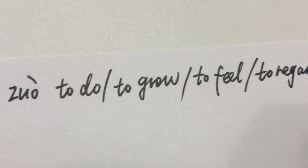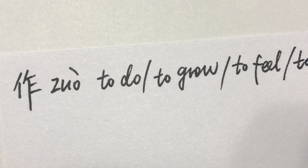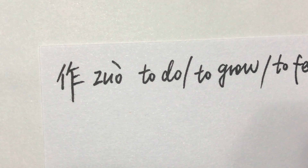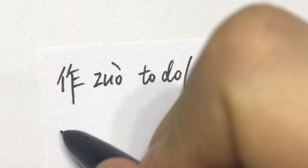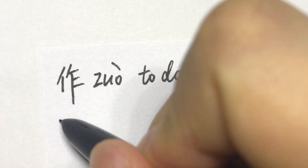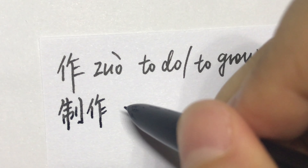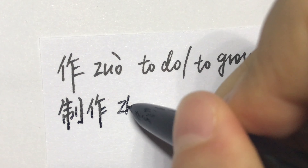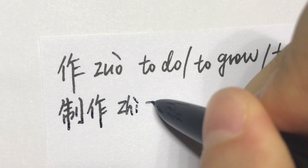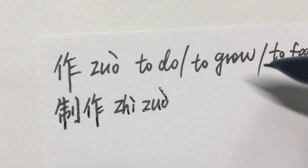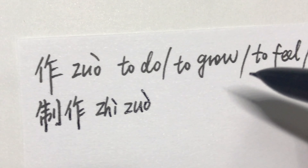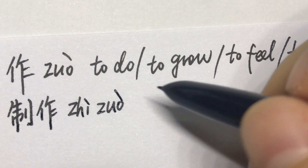作为, for example, 制作. 制作 means to make, to manufacture.